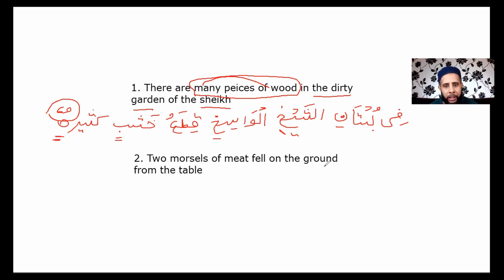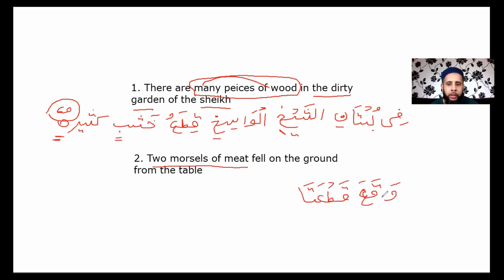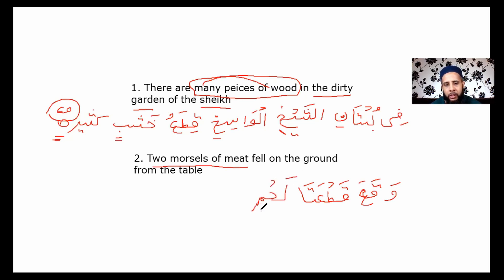Question 2: two pieces of meat fell on the ground from the table. We're going to start with وقع which means 'it fell.' The subject of وقع is 'two pieces of meat', so that comes first. If you just say two pieces it would be قطعتان, but here it says two pieces of meat, so we have mudaf and mudaf ilaihi. When duals form the mudaf, they lose the noon, so it becomes قطعتا — and meat is لحم, so قطعتا لحم.